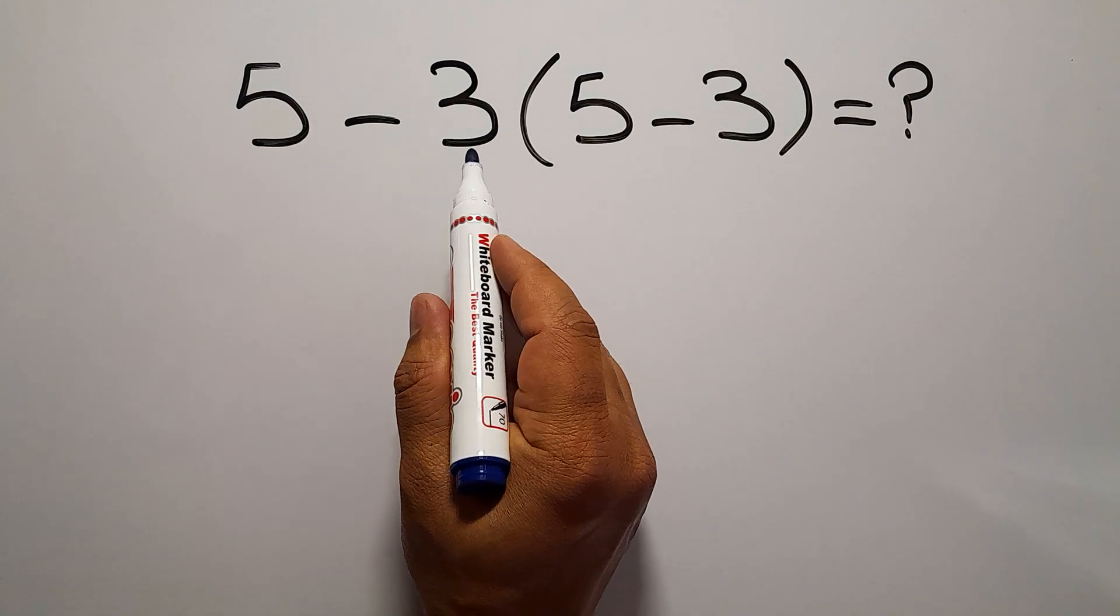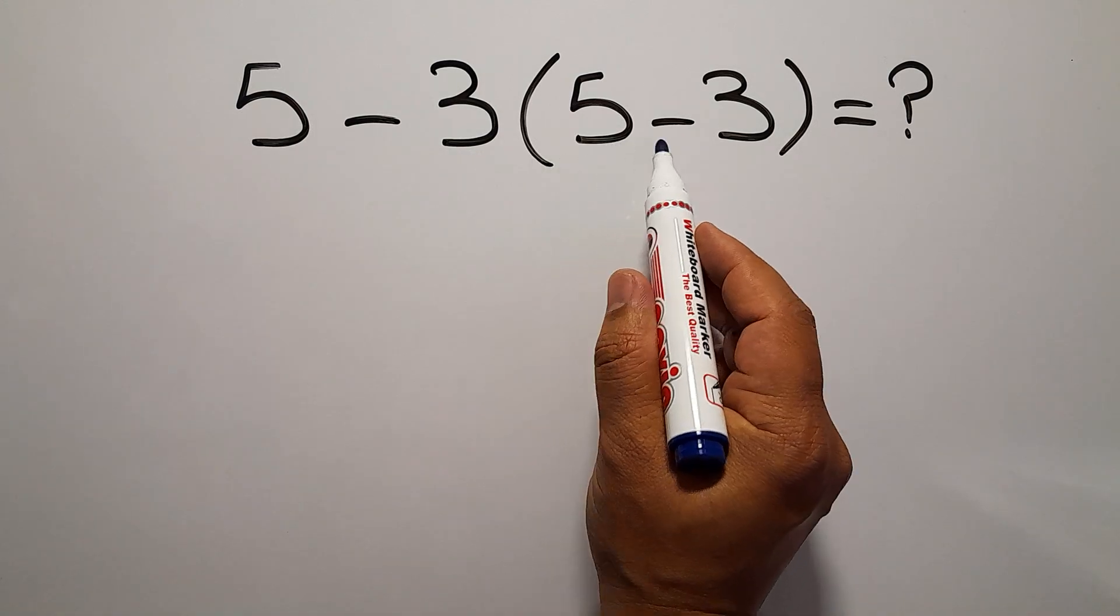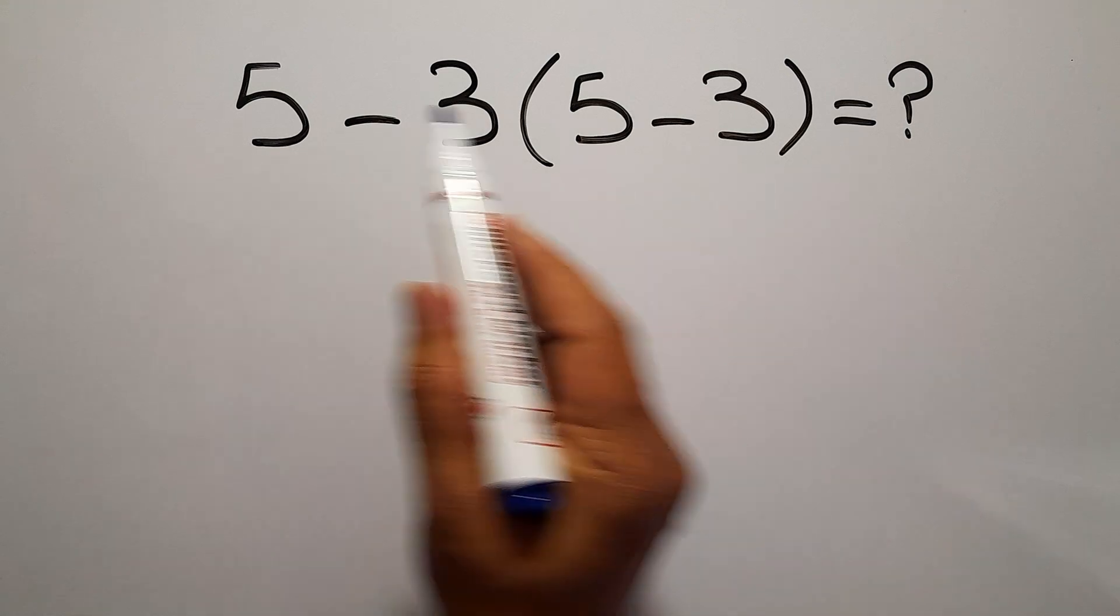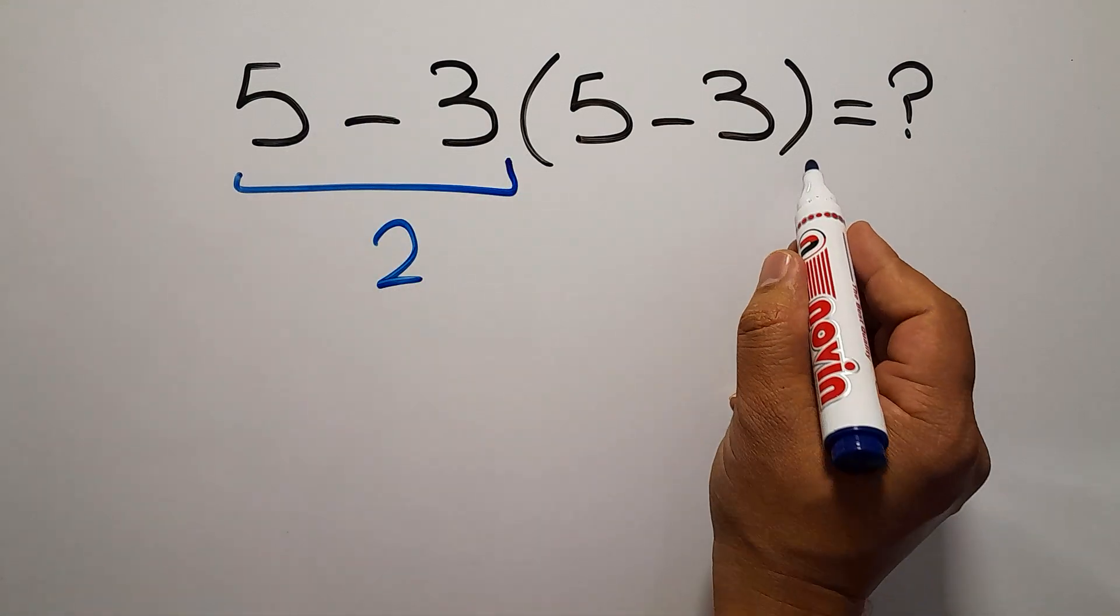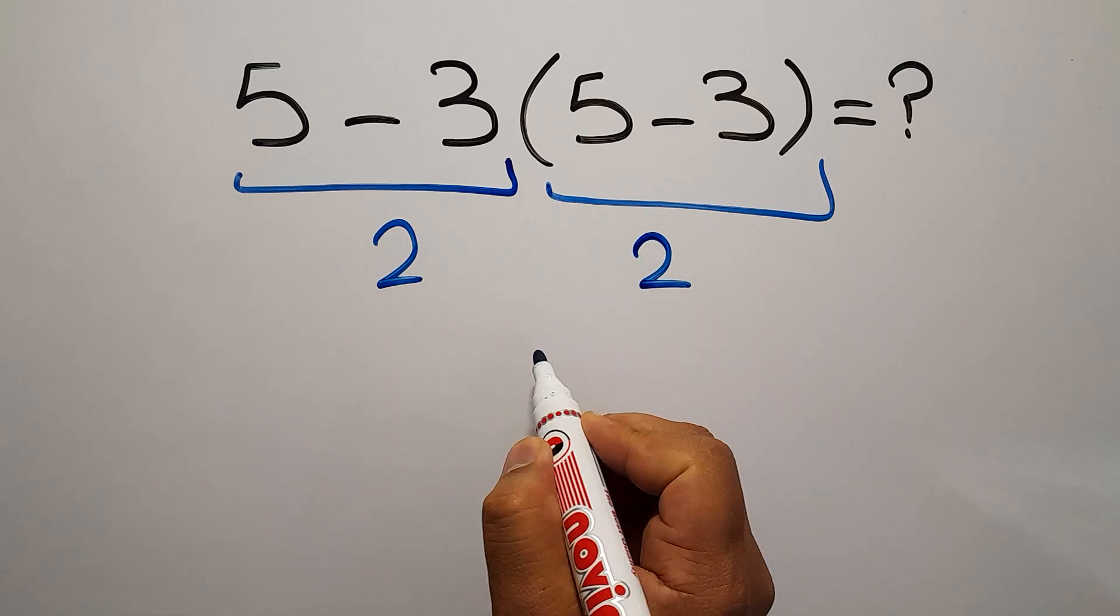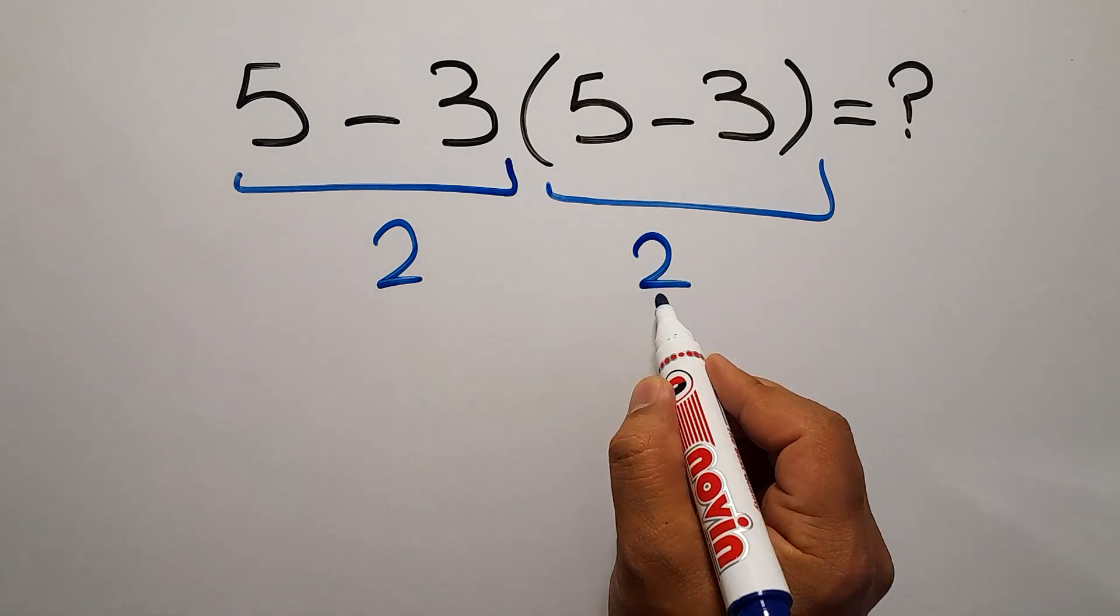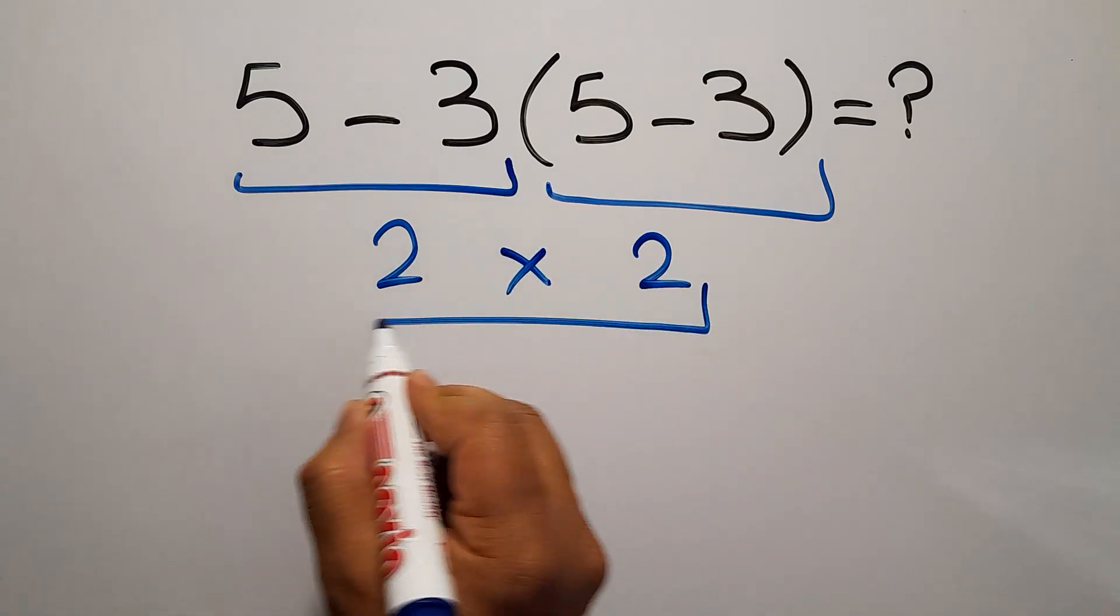5 minus 3 then times 5 minus 3. 5 minus 3 is just 2. So again we have here 2 and 2 times 2 which equals 4.